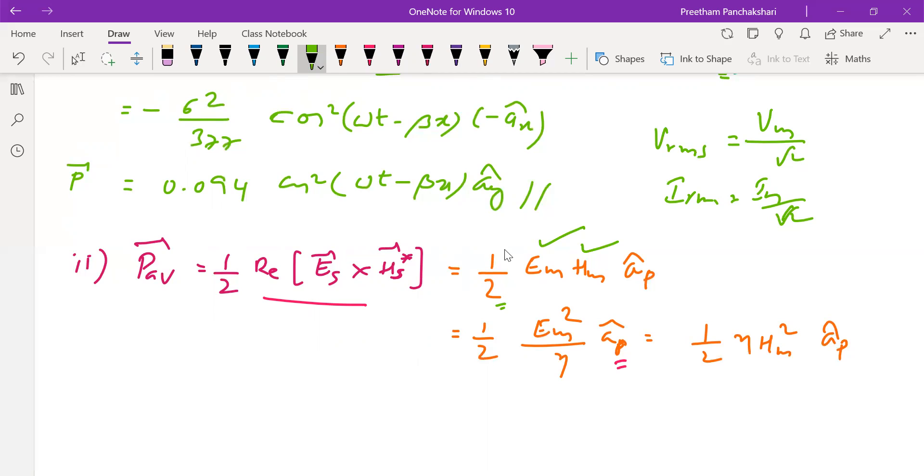Based on this, this 1/2 can be split into 1/√2 and 1/√2 and taken under E and H. So that time we can also think of this formula: E_RMS H_RMS â_v will give you the average Poynting vector in terms of RMS values.